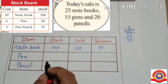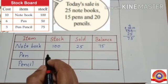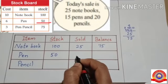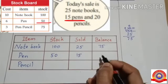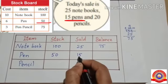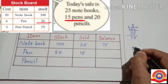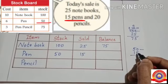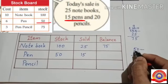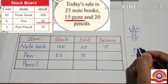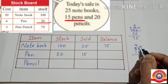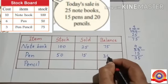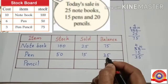Like that, what is the total number of pens? Yes, 50. How many pens were sold today? Yes, 15. To find the balance number of pens, subtract 15 from 50. It is not possible to take away 5 from 0, so we have to borrow 1 from 5. 0 becomes 10 and 5 becomes 4. 10 minus 5 is 5, 4 minus 1 is 3. So the balance number of pens is 35.